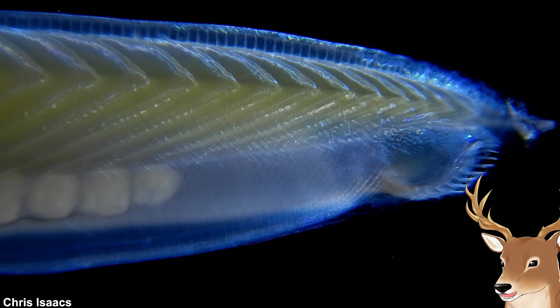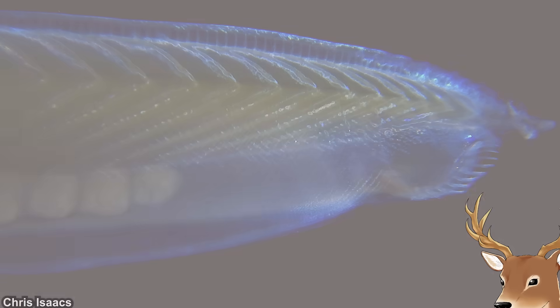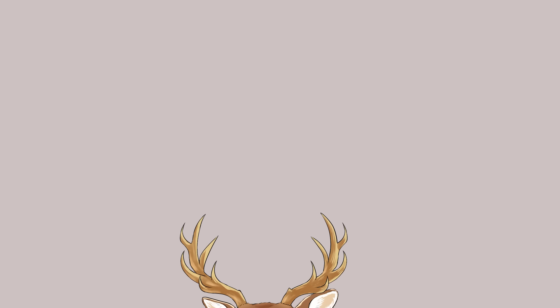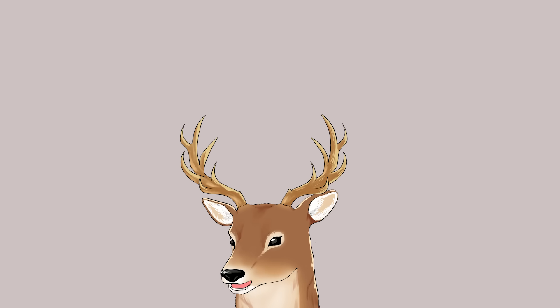Now I did say the name of their class, Leptocardii, means 'thin heart,' and I said that's not exactly true — because they don't have a heart. They have a simple circulatory system quite similar to that in primitive fishes, but the core difference is lancelets don't have a heart. They don't have red blood cells either.